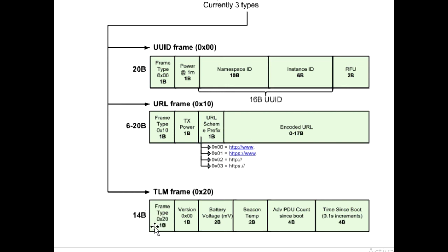For Eddystone telemetry, it is used when you want to measure voltage, temperature, or other metering data. Similar to above, we have the frame type and version, then two bytes for battery voltage, then temperature data, advertisement PDU count since boot — which indicates how long it has been advertising — and finally time since boot, which is incrementing.